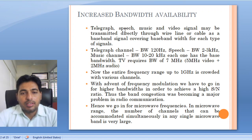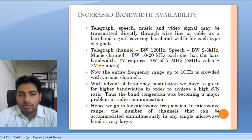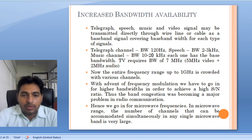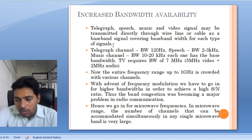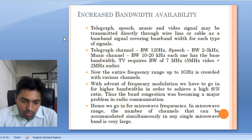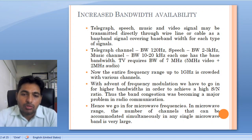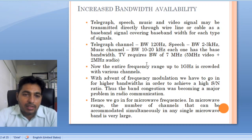Starting with increased bandwidth availability: many applications require some bandwidth — telegraph requires 120 Hz, speech requires 2 to 3 kHz, music requires 10 to 20 kHz, and TV channel requires 7 MHz. Low frequency is crowded with these applications, so the natural solution is to go for higher frequency. We modulate all these channels to a higher microwave frequency where the bandwidth is quite large.